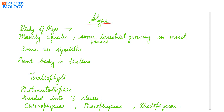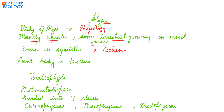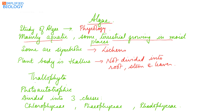The study of algae is known as phycology. Algae are mostly aquatic; some are terrestrial, growing on moist places, and some are symbiotic like lichens, where they are associated with fungus. The plant body of an alga is a thallus — it is not divided into root, stem, and leaves. That is why they are placed under the group Thallophyta according to the older classification. These are photo-autotrophic organisms, as they contain chlorophyll.